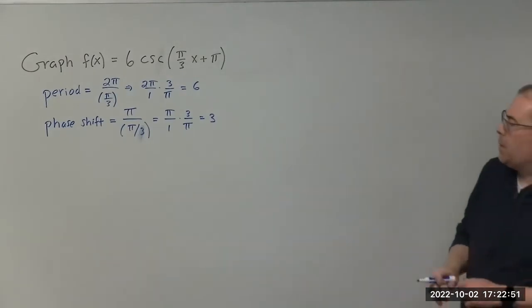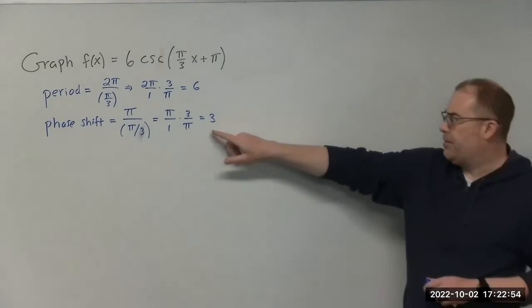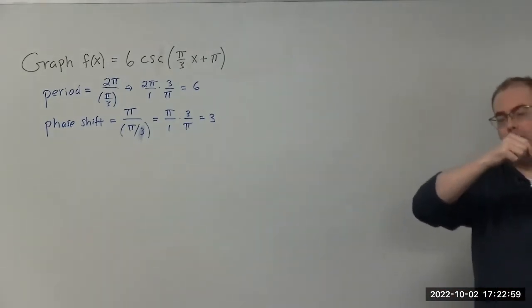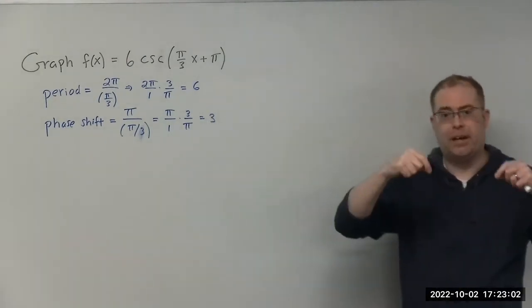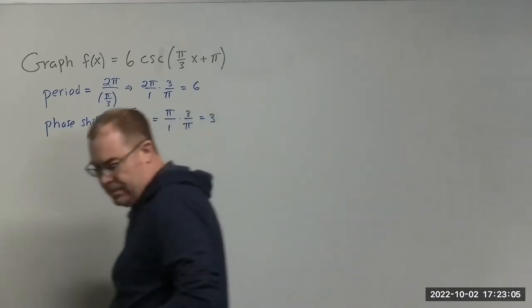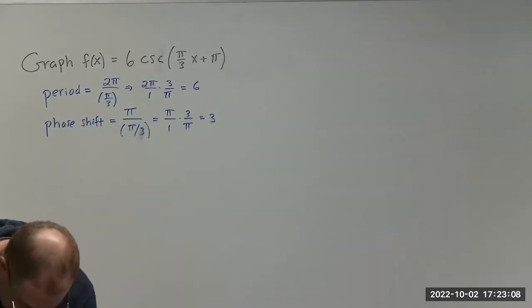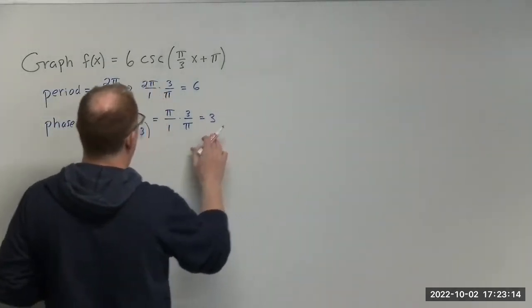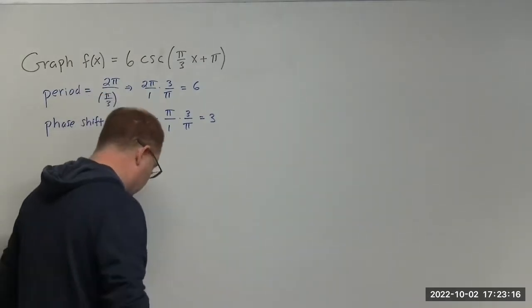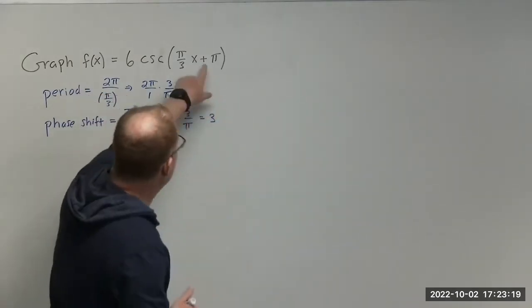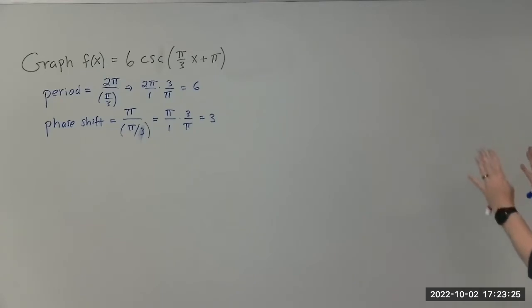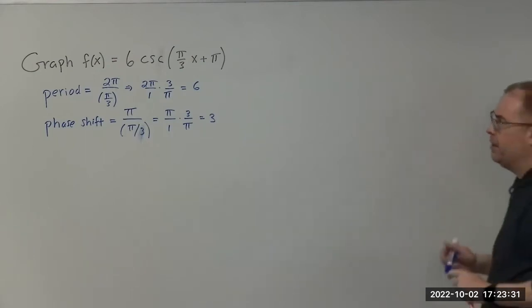Simplifying: pi over 1 times 3 over pi gives us 3. So the phase shift is 3. Remember that the phase shift is our starting point, and because there's a plus sign here, the function is going to shift to the left. If it were minus, it would shift to the right.